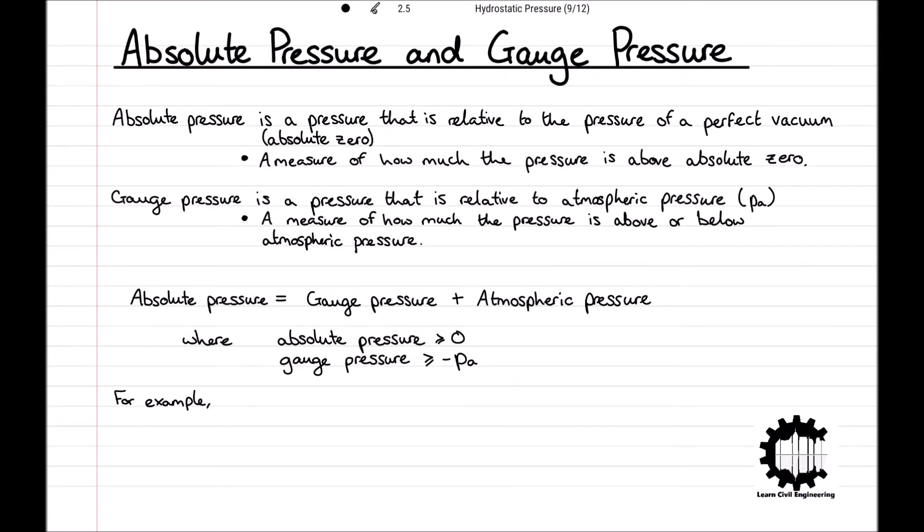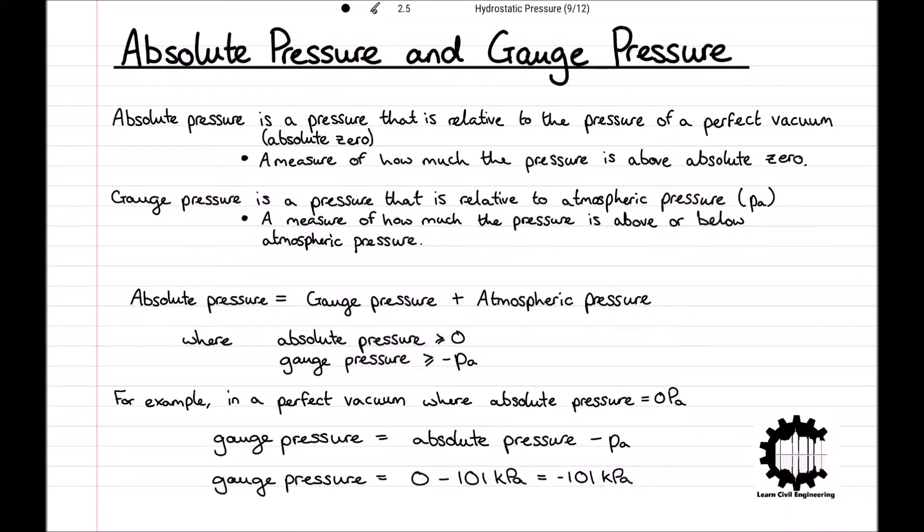For example, in a perfect vacuum where absolute pressure is equal to zero, using the relation of gauge pressure equals absolute pressure minus atmospheric pressure, the gauge pressure is equal to zero minus the atmospheric pressure of 101 kilopascals. So the gauge pressure is equal to minus 101 kilopascals in a perfect vacuum.